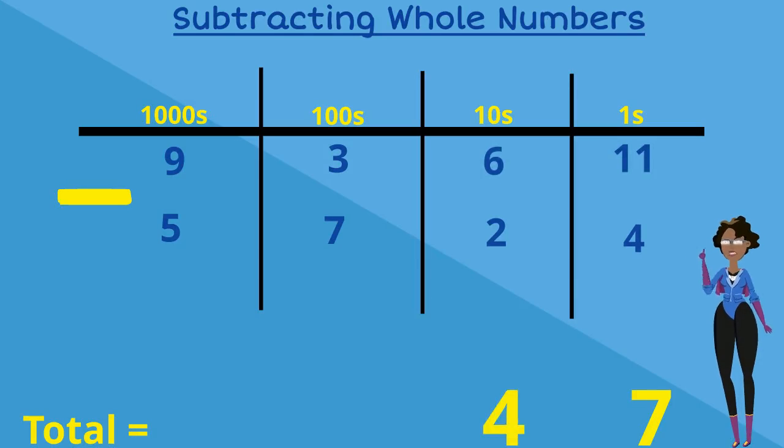Let's move on to our hundreds column. 3 cannot take away 7 because 3 is less than 7. So this means we have to borrow 1 from the column to the left, which is the thousands column. The 3 then becomes 13 because 1,000 is actually 10 hundreds. Now we have 13 take away 7, which is equal to 6.